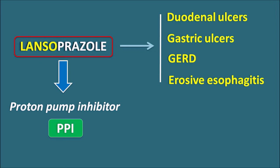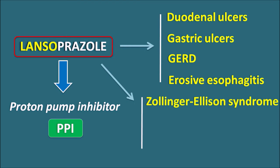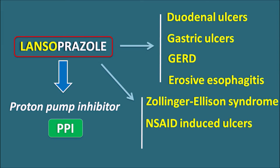Lansoprazole can also be used in other conditions associated with excessive secretion of gastric acid. For example, it can be used in the treatment of Zollinger-Ellison syndrome, a gastrin-producing syndrome that increases gastric acid release. It can also be used in NSAID-induced ulcers, as most NSAIDs can induce gastric ulcers and irritation when used for a prolonged period. In such conditions, proton pump inhibitors like Lansoprazole are used.